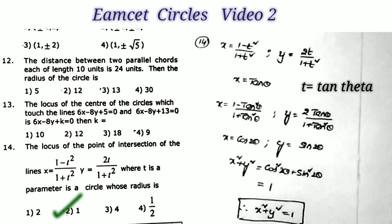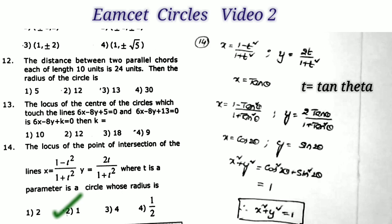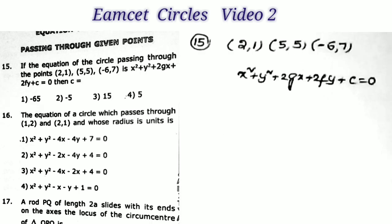Therefore the circle has center (0, 0) and radius = 1. That is the second option.